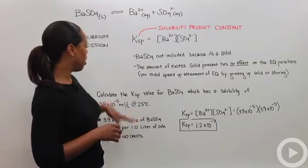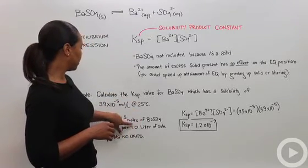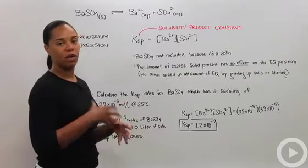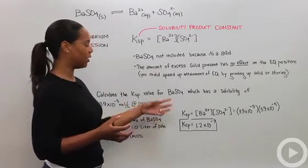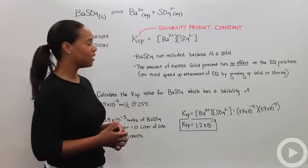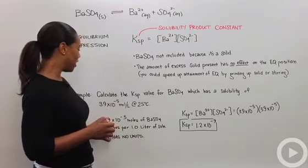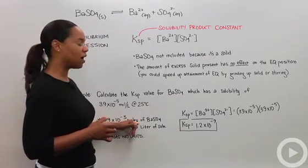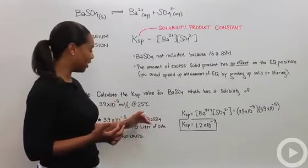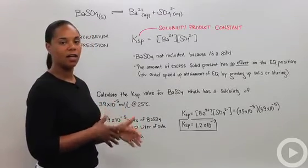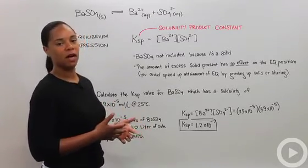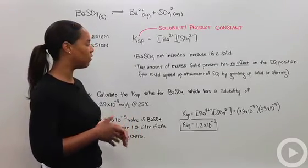Therefore, if this is the amount of barium sulfate that we have, when it breaks up into its ionic species—Ba²⁺ and SO₄²⁻—we have 3.9×10⁻⁵ moles per liter of Ba²⁺ ion and 3.9×10⁻⁵ moles per liter of SO₄²⁻ ion.